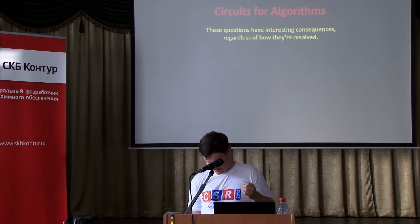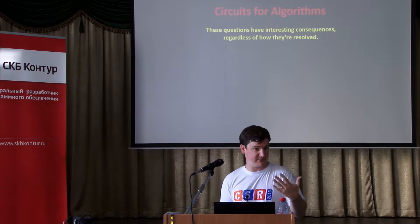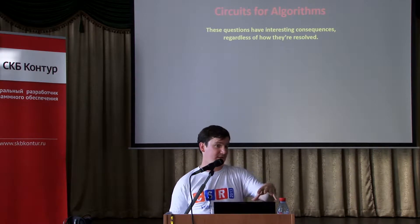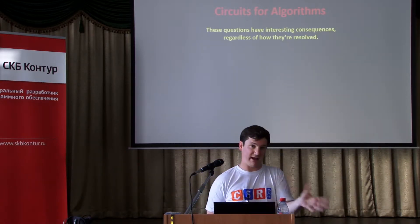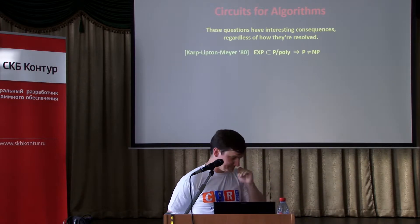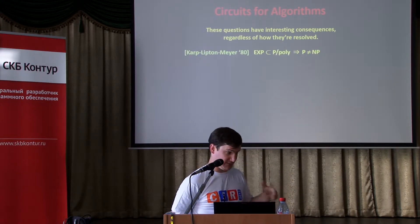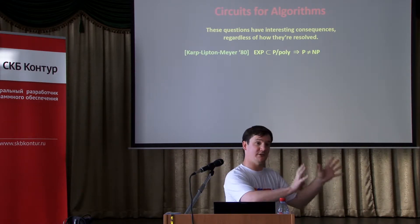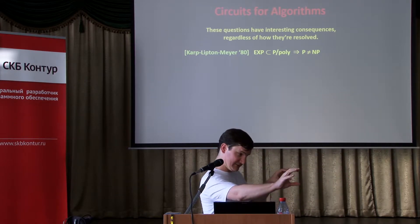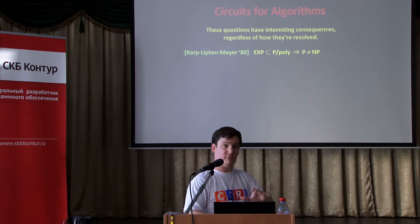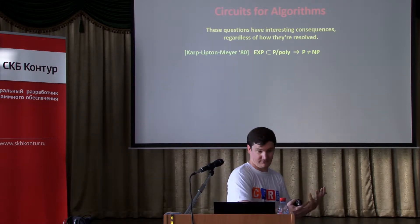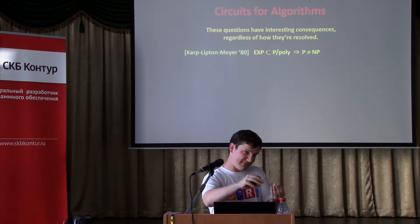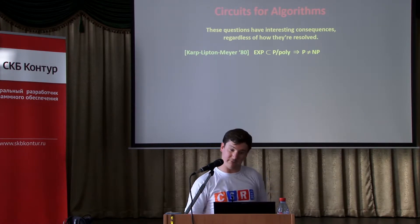One thing I want to mention is that questions about circuit complexity — say, whether exponential-time, 2-to-the-n algorithms can be implemented with polynomial-size circuits — are interesting no matter how you resolve the question. It was shown by Karp, Lipton, and Meyer that if every algorithm running in 2-to-the-n time has polynomial-size circuit families, then P≠NP would follow. So if there were this very efficient way to solve exponential-time problems using this infinite computational model, you would resolve P versus NP.